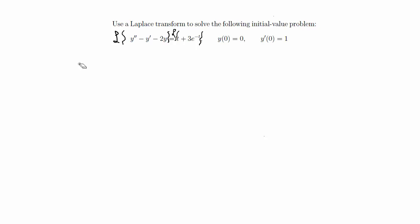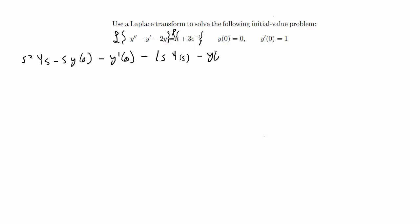On my Laplace table we have the Laplace transform of y double prime and y prime. The Laplace transform of y double prime is s squared Y(s) minus s·y(0) minus y'(0), minus the Laplace transform of y prime, which is s·Y(s) minus y(0), and then minus 2·Y(s). That's the left hand side.